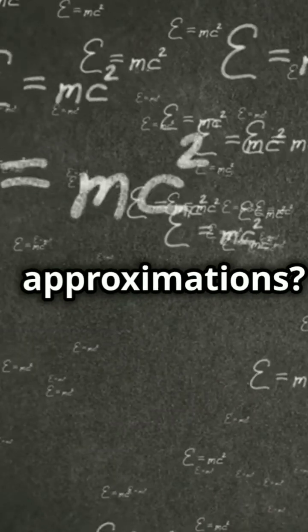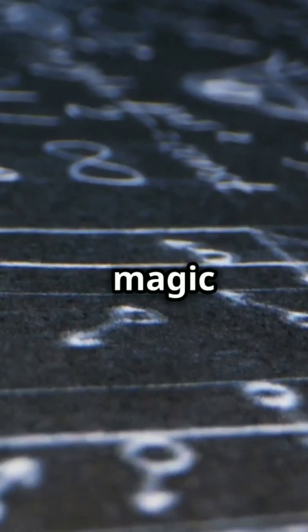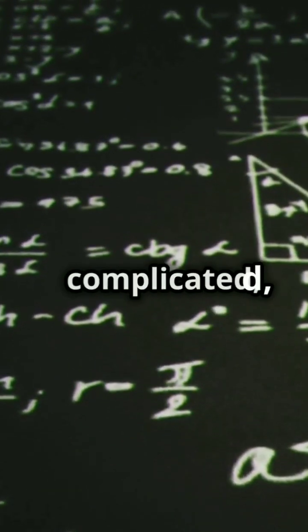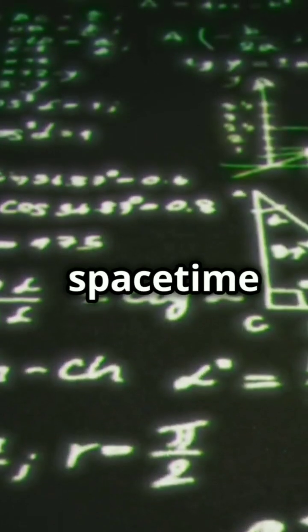Why do physicists love linear approximations? Let's dive into the magic of linearized gravity. Linearized gravity is like hitting the easy mode button on Einstein's complex equations. It's an approximation where we ignore the super complicated non-linear parts of the space-time metric.